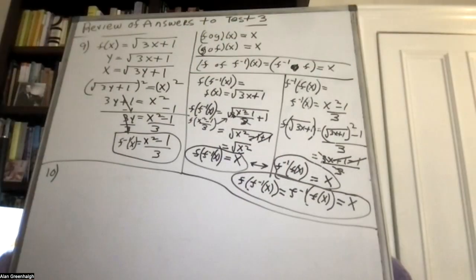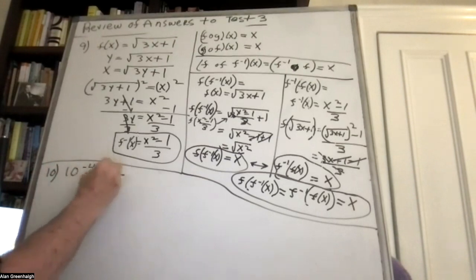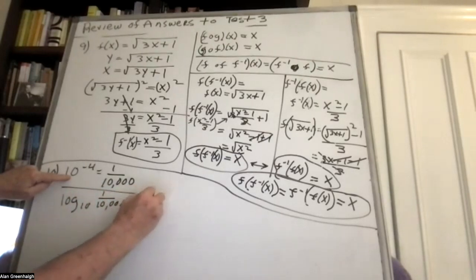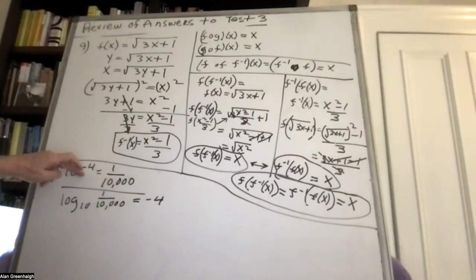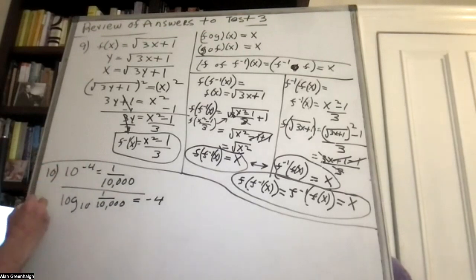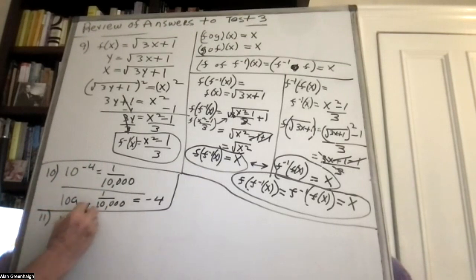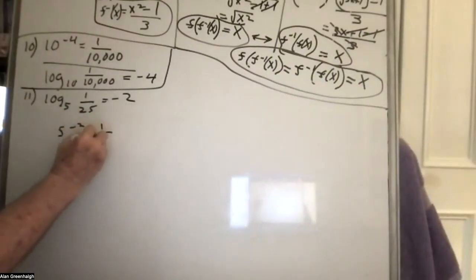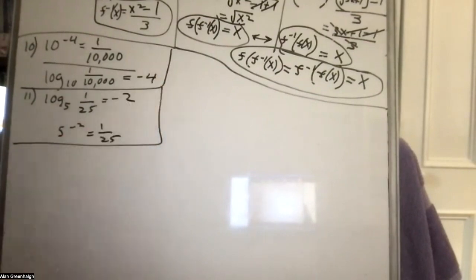Problem 10 and 11 — very few people got wrong, like a gift of 6 points. You're given an exponential function and asked to change it to logarithmic form. The log base 10 of 1 over 10,000 equals negative 4. I just wanted you to go from exponential to logarithmic form. In problem 11, it was the opposite — convert from logarithmic to exponential form: the base to the exponent equals the number.